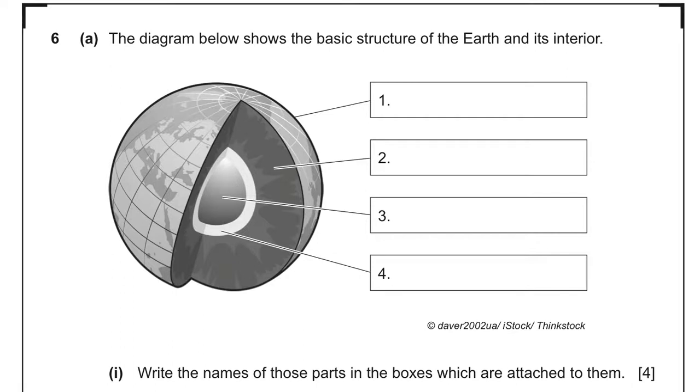The diagram below shows the basic structure of the Earth and its interior. Part 1: Write the names of those parts in the boxes which are attached to them. You've got four parts here. You've got crust, inner core, outer core and mantle.